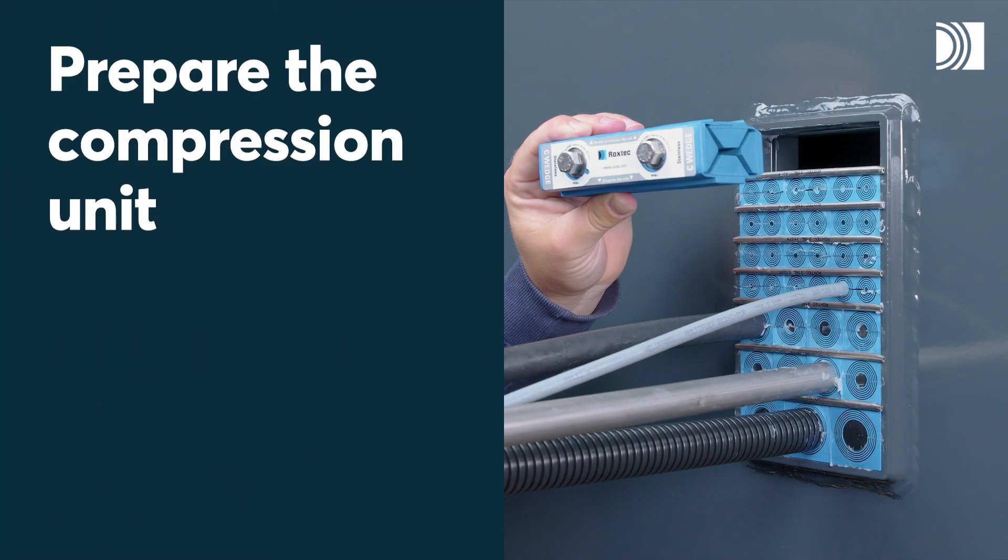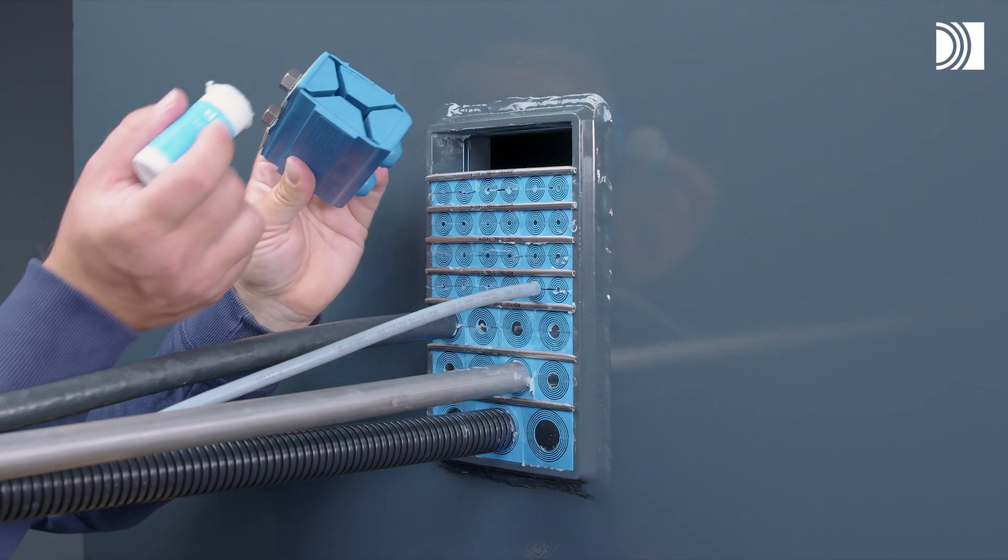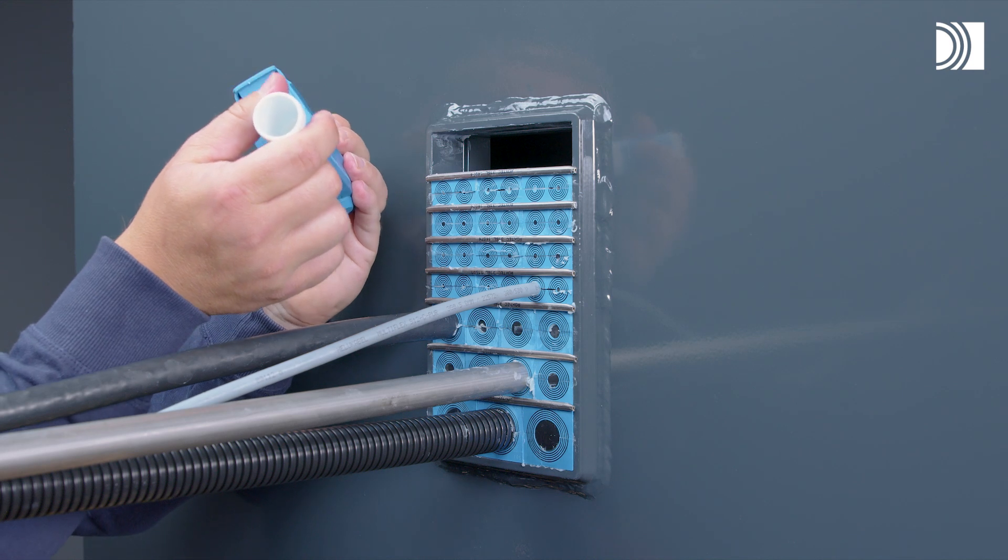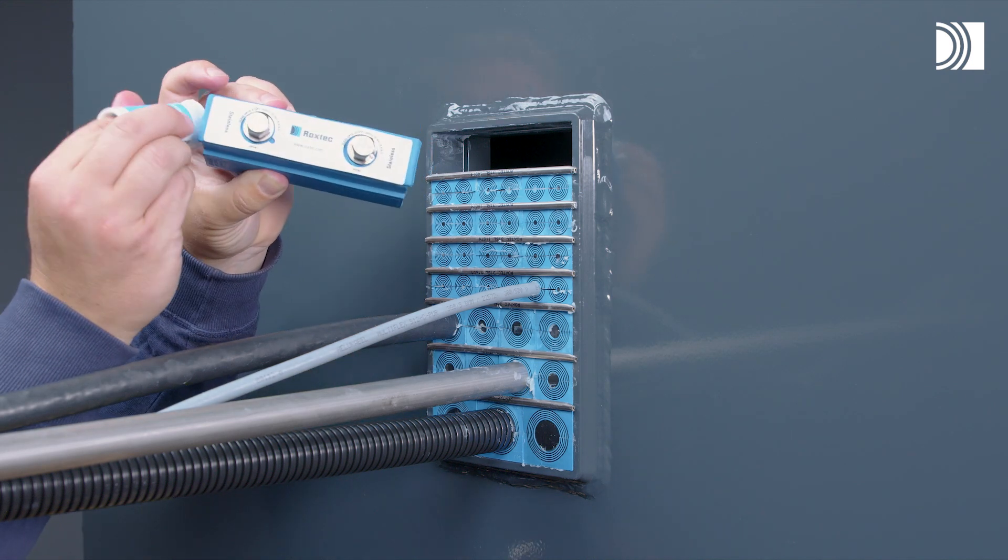Prepare the compression unit. Fully untighten the screws to decompress the wedge. Lubricate the short sides of the wedge.